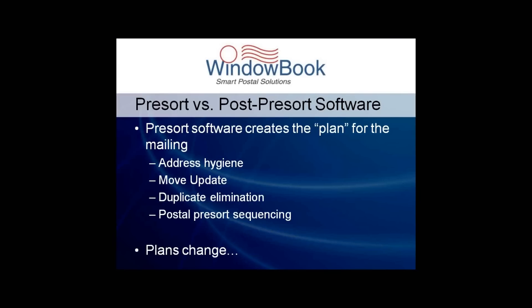Let's have a quick refresher on pre-sort and post-presort software. We've written white papers and over the last few years we really see the terms and the concept taking hold in the industry. Pre-sort software is software used to prepare the initial plan for a mailing. It includes elements such as address hygiene and move update functions, duplicate elimination, as well as the more commonly known function of sorting address records into the sequence specified by the postal service in order to take advantage of various postage discounts. That's your actual pre-sort step, and everything together is pre-sort software.